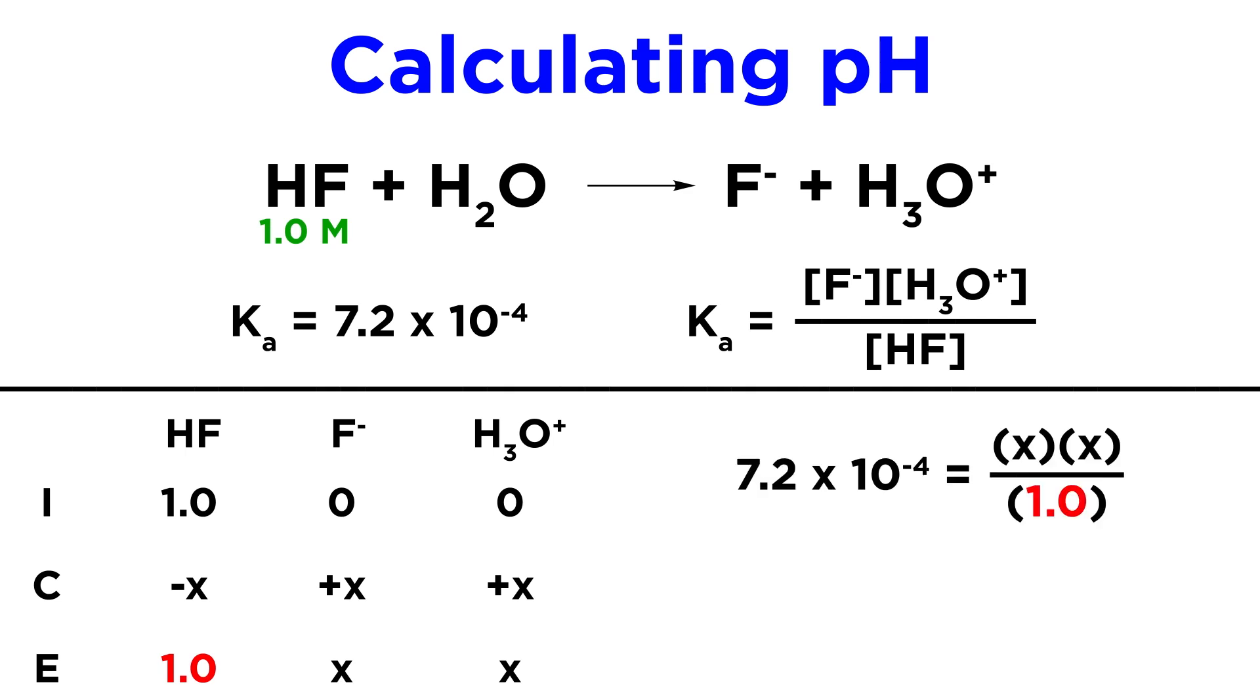So let's just keep this as 1 molar on the bottom. This means that in order to solve for X, we can simply take the square root of both sides, since we have X squared on the right. This leaves us with X being equal to 0.027.